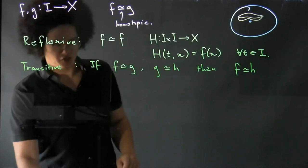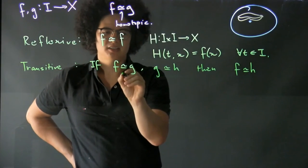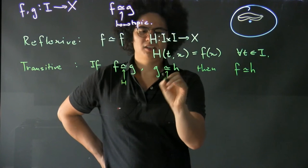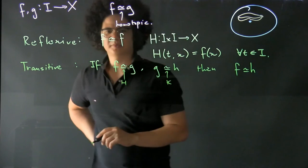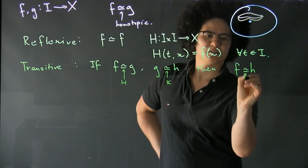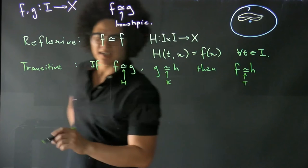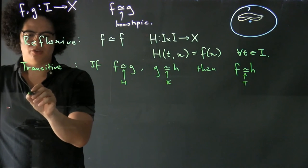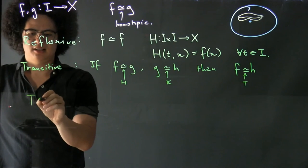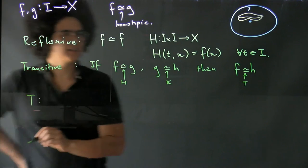But we should construct another homotopy. And what's that homotopy going to look like? Okay, well there's a homotopy here. I'm going to call that capital H. And there's a homotopy here which I'm going to call capital K. And I'm going to construct a homotopy here which I'm going to call T. Why not? T is going to be from the interval crossing the interval into X.